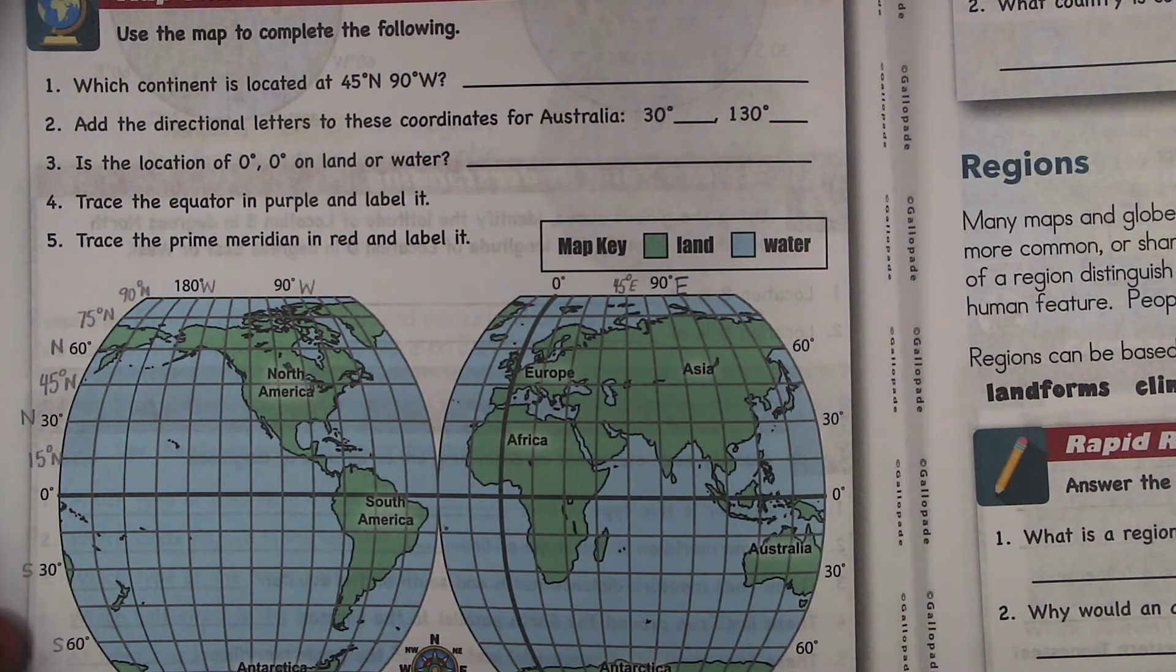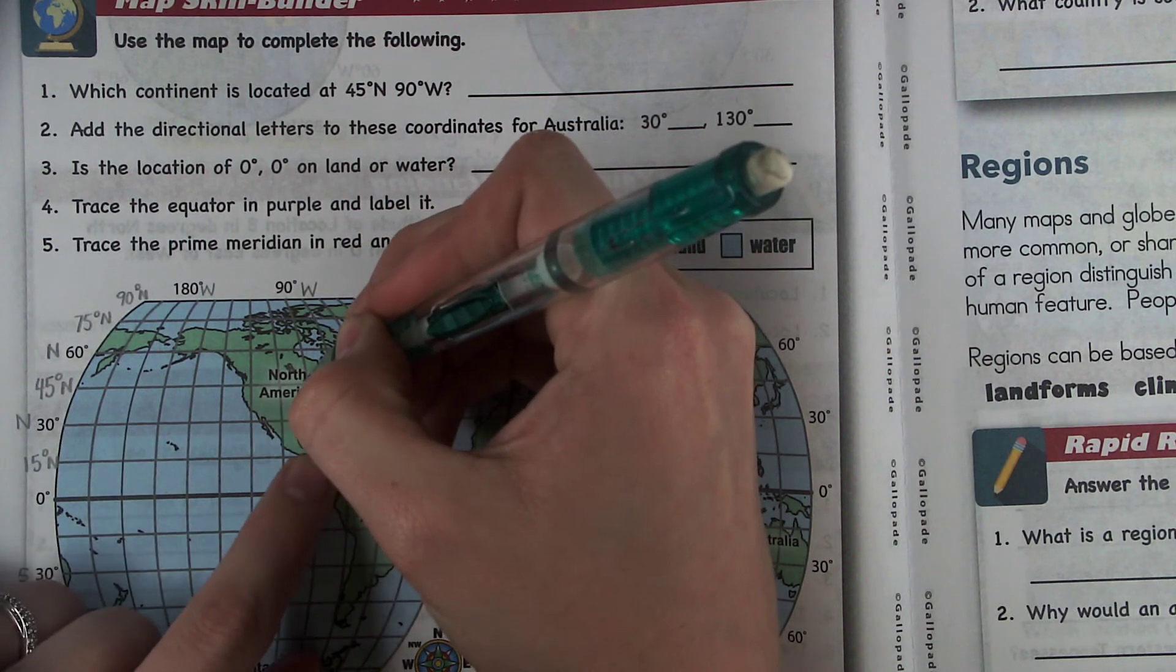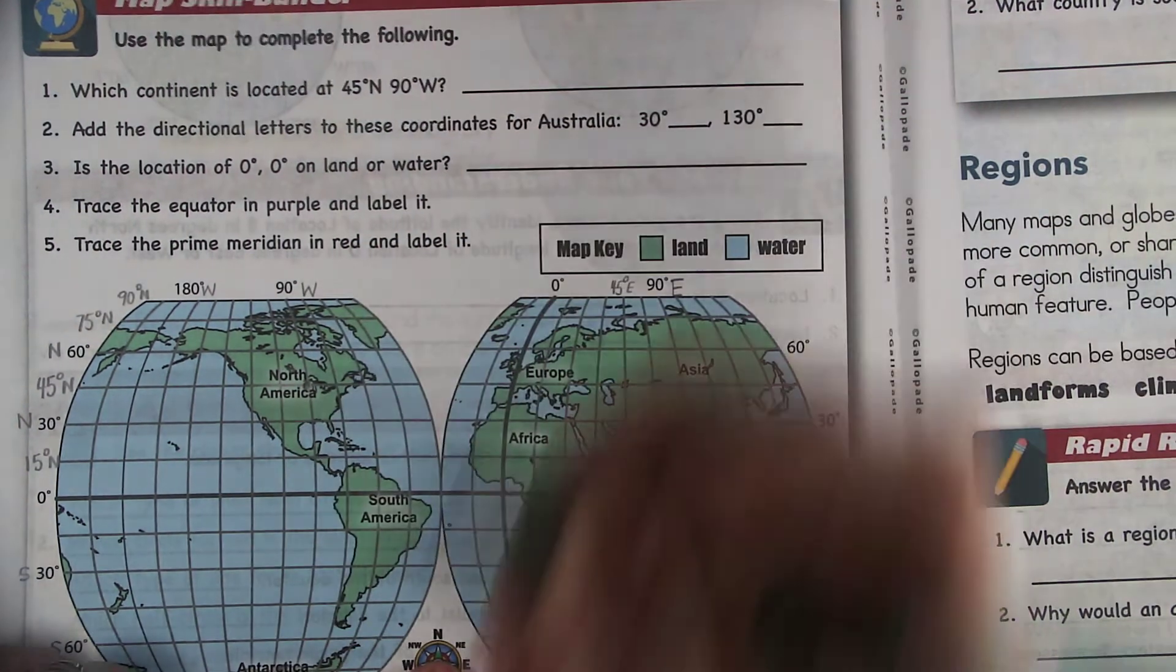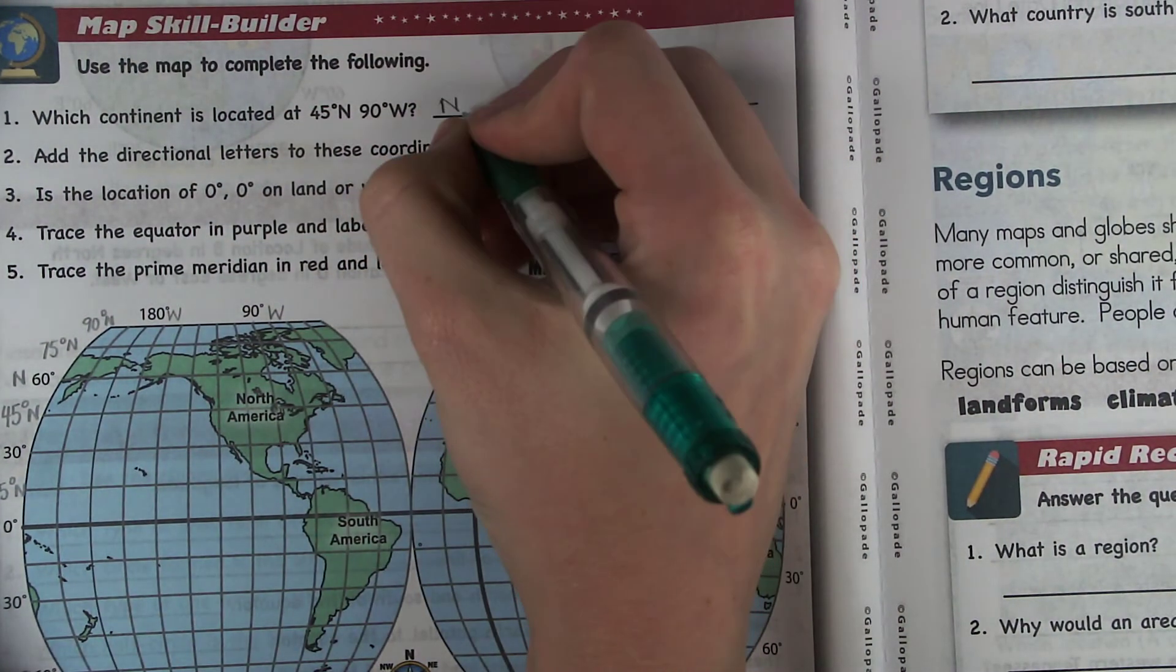And then 90 degrees west, we have right here. So you just have to trace them together. Here's your point. So what continent? That would be North America.